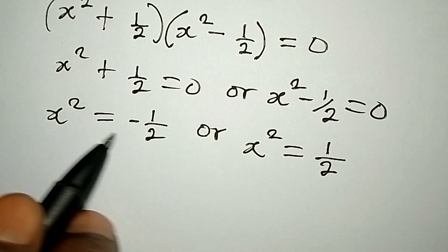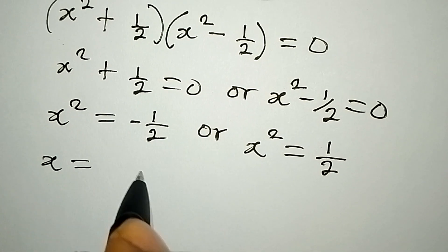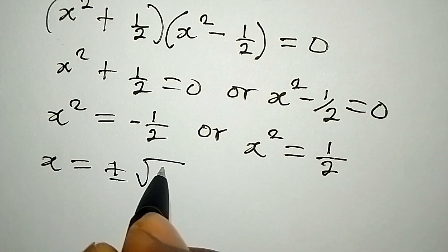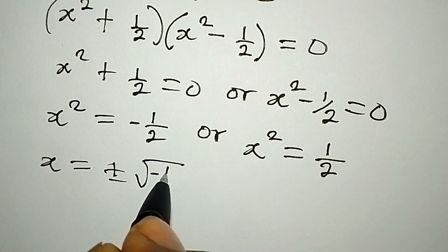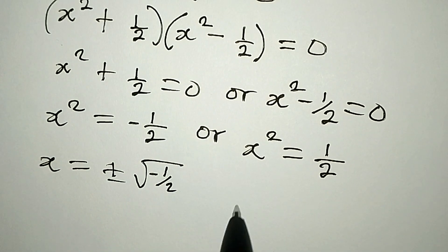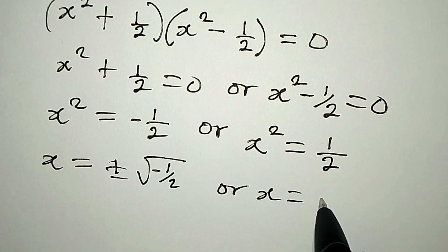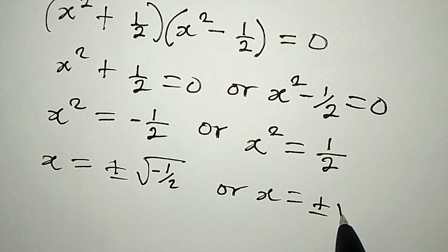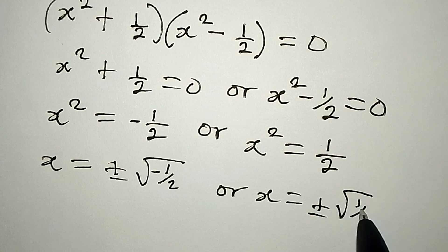We take the square root of both sides, so x equals plus or minus the square root of negative 1 over 2, or on the other side, x equals plus or minus the square root of 1 over 2.